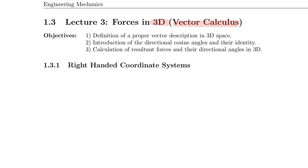My first goal today is to define a proper description in 3D spaces, including the coordinate system and how we express vectors in 3D. Then I want to talk about something very important: the directional cosine angles and their identity, which will come in very handy when we solve problems in 3D for force additions. Our ultimate goal is to calculate the resultant forces in 3D systems and identify their directional angles.